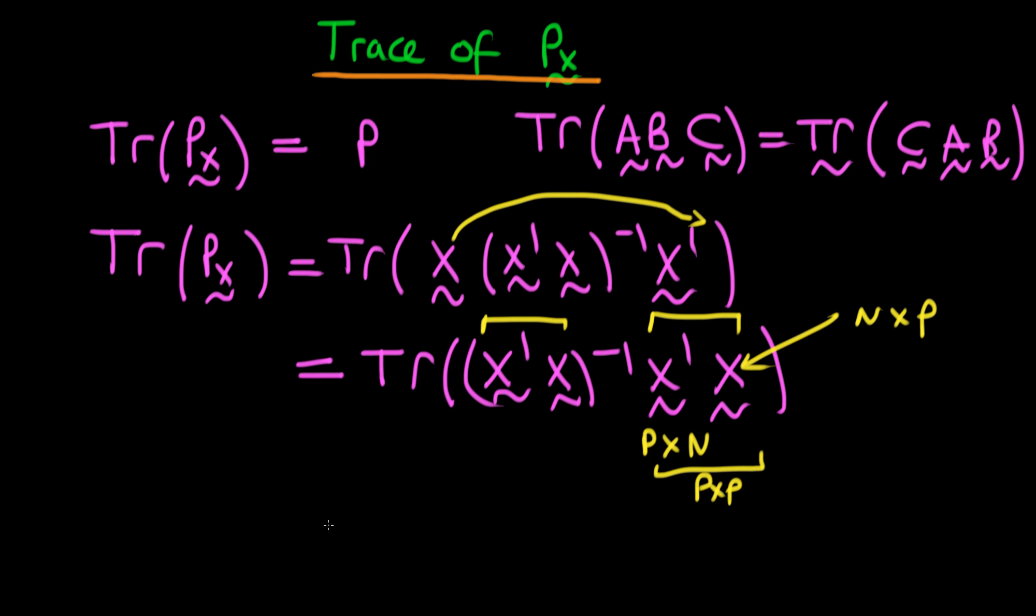So, when we've got a matrix times its inverse, we're just going to be left with the identity matrix. But we've reasoned thus far that this is going to have to be an identity matrix of dimensions p by p.